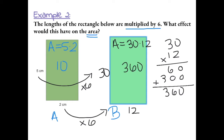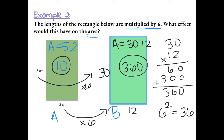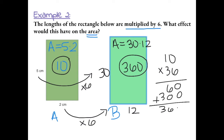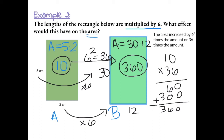Our sides increased by 6 times the amount, so the area should have increased by 6 squared. 6 squared is equal to 36 times greater. 10 times 36 gives us 360, confirming that the area increased by 6 squared, or 36 times the amount.